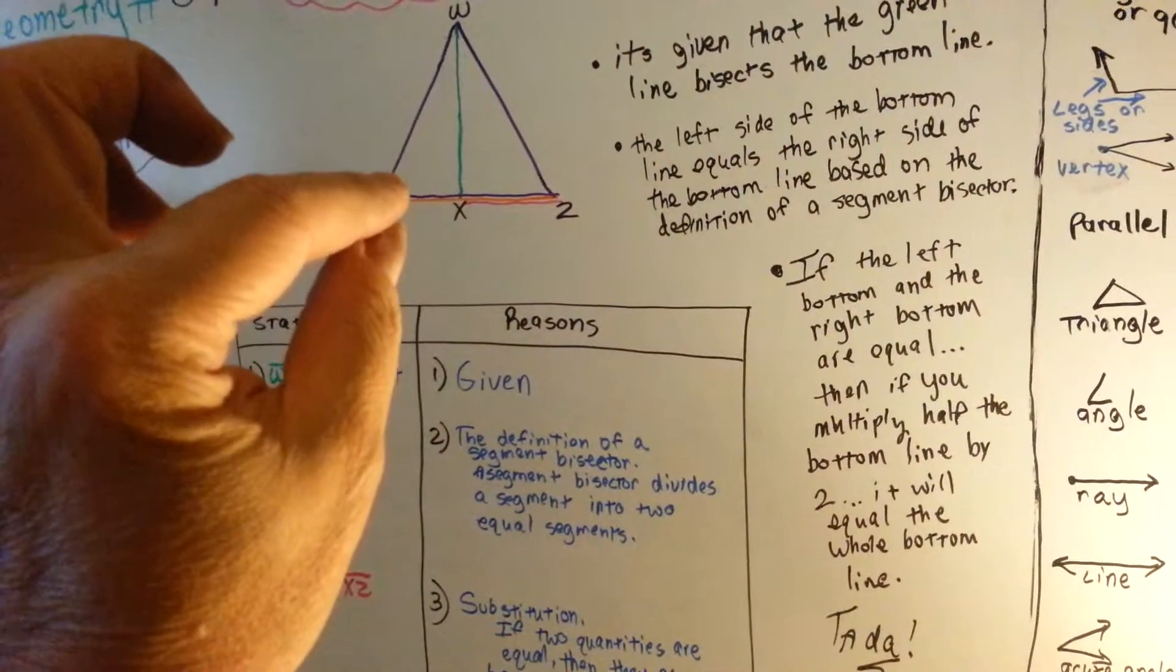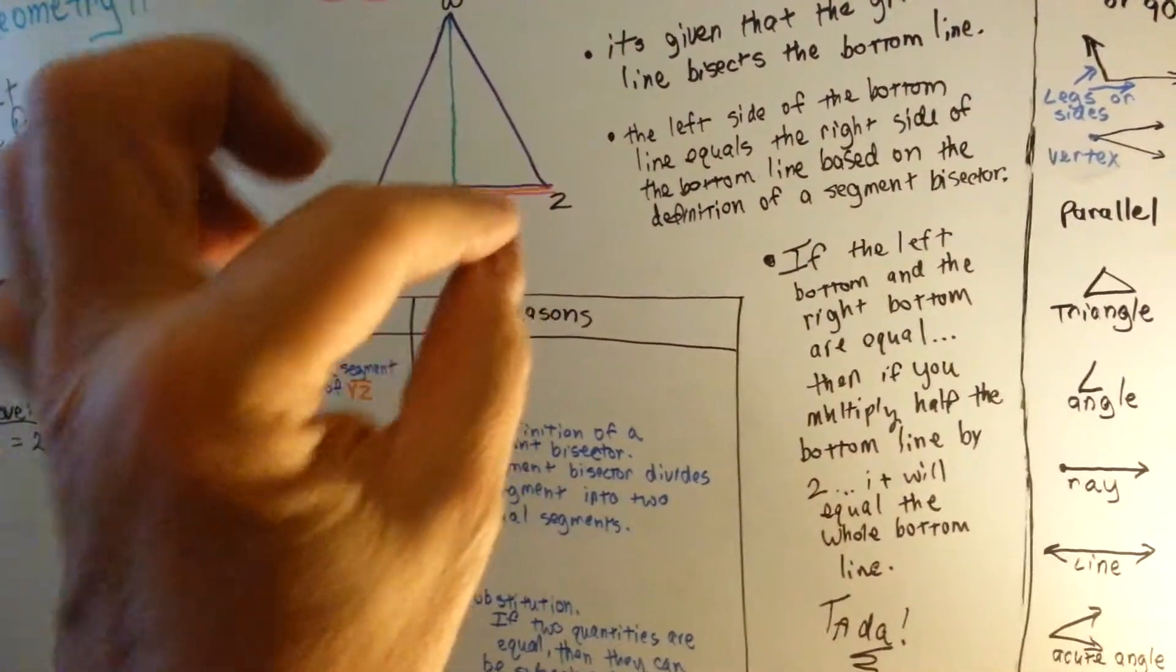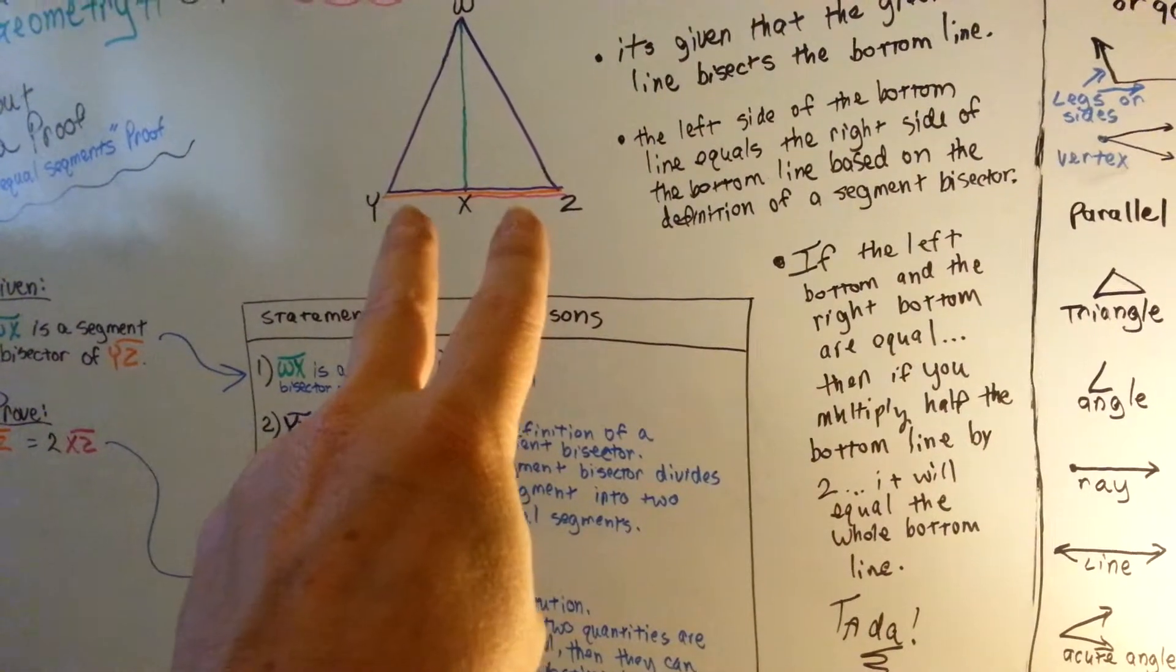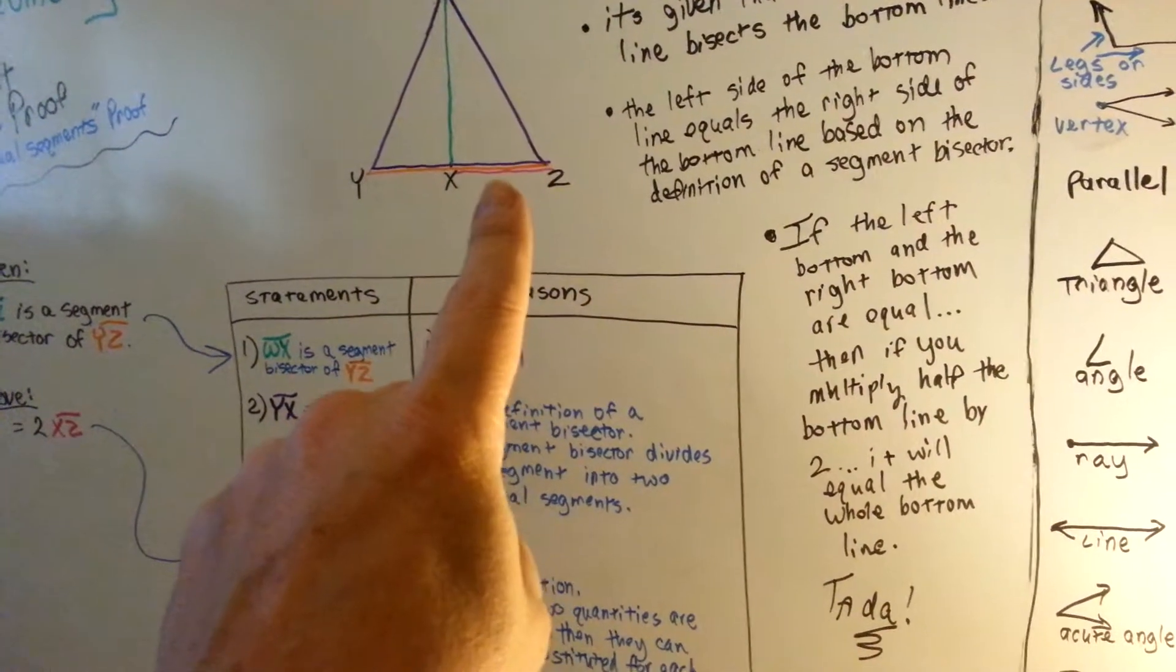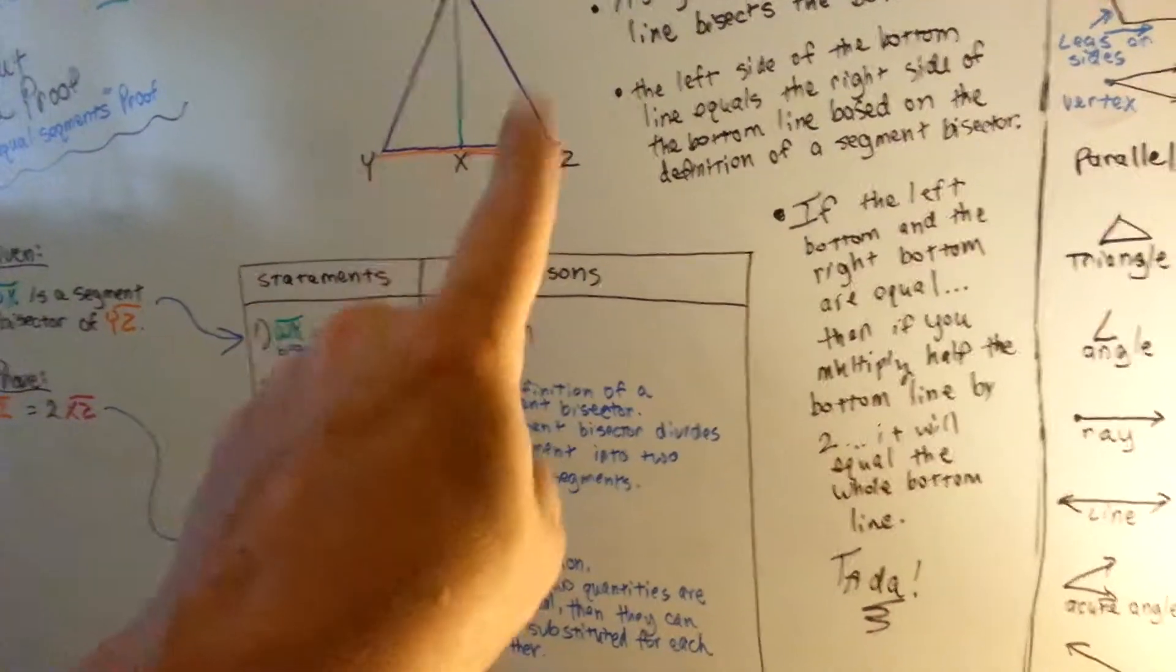If the left side of the bottom and the right side of the bottom are both equal, then if you multiply half this bottom line by 2, it'll equal the whole bottom line.